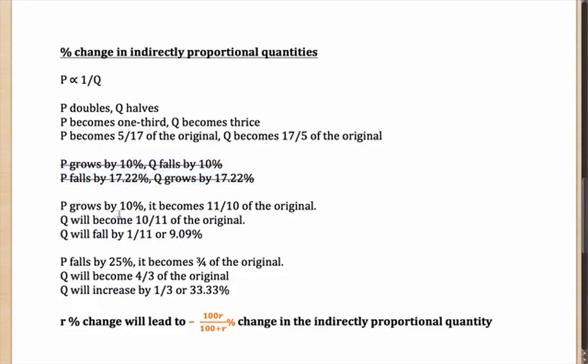Well, if P grows by 10%, it becomes 11/10 of the original, because it has grown by 1/10 in a fraction. That means if P is becoming 11/10, Q will become 10/11 of the original. Which means Q will fall by 1/11 or 9.09%.